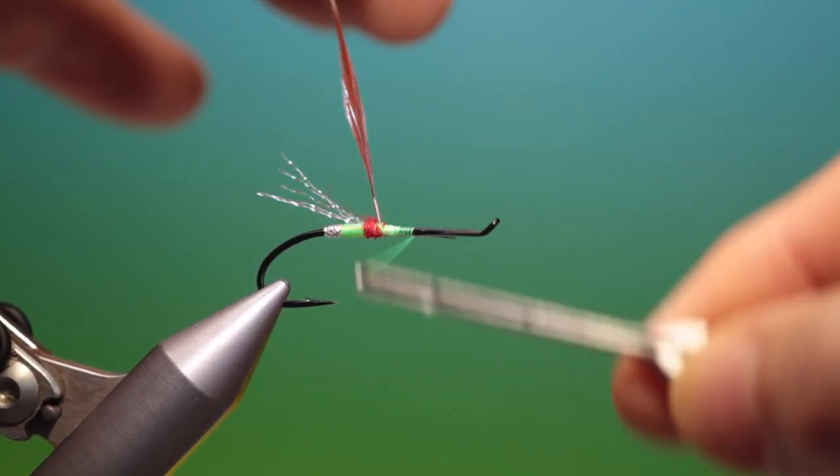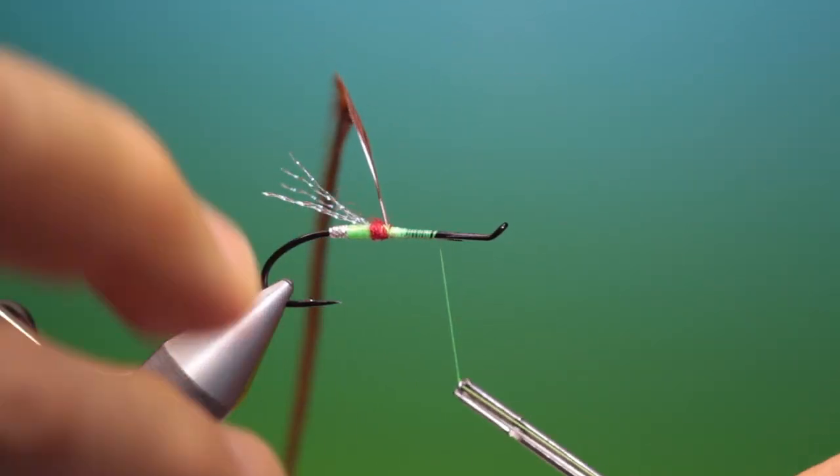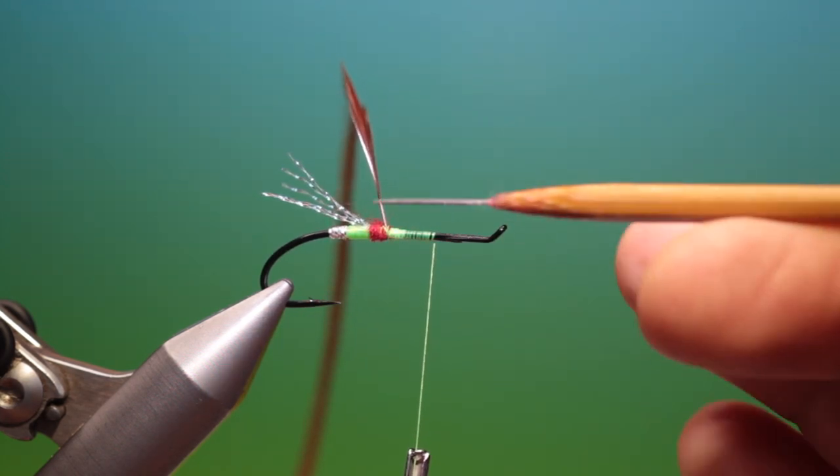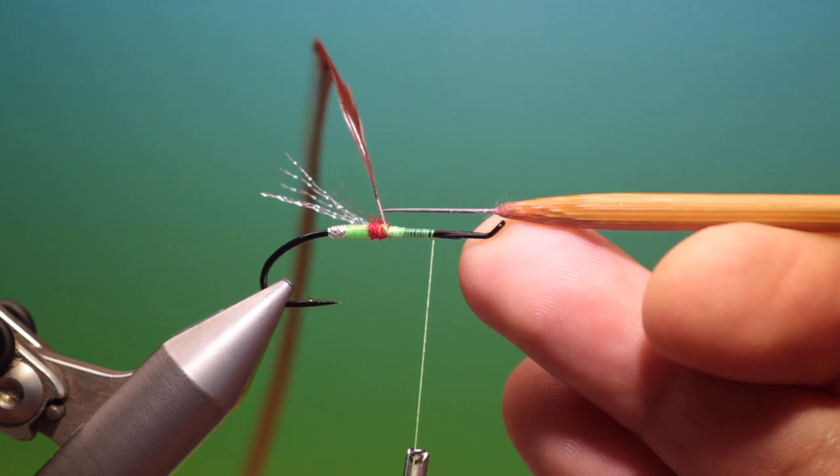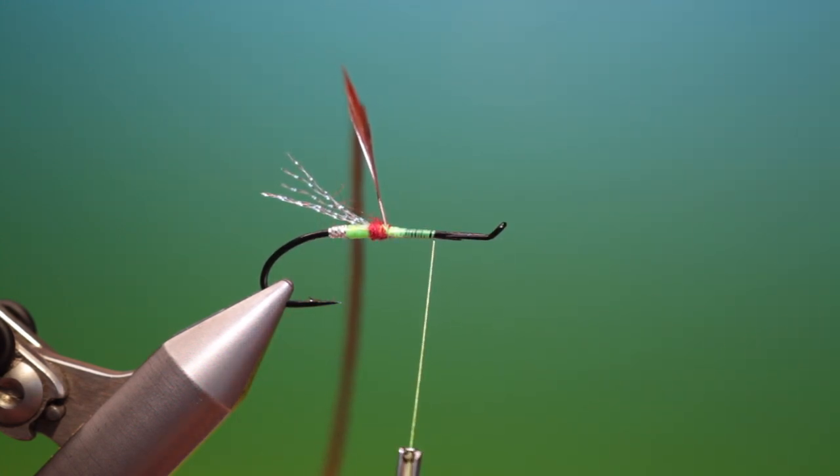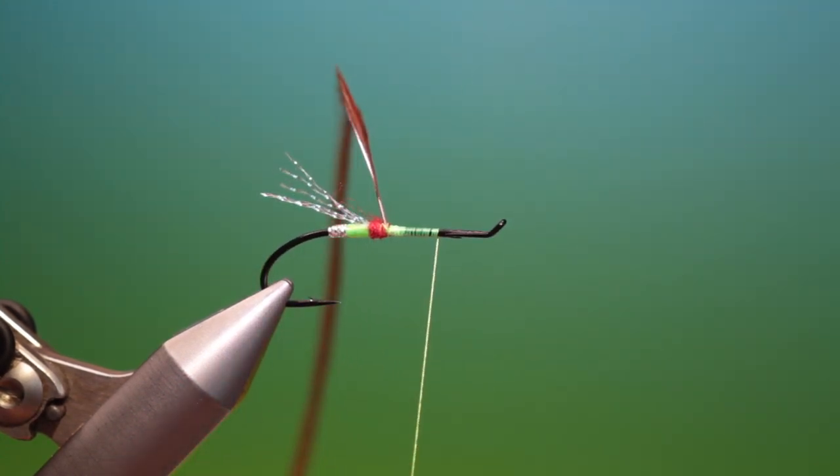And we'll go forward with our tying thread and it's important that you have this little bit of stem here, a stripped stem on the hackle so when we start winding the palmered hackle we can control it. So we'll just go forward to there.